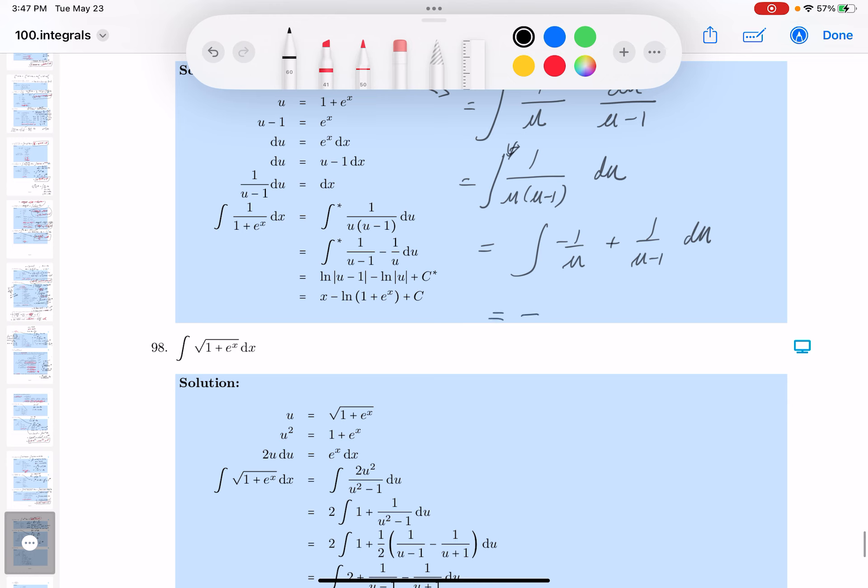It's going to be minus the natural log of the absolute value of u plus the natural log of u minus 1 plus some constant of integration.